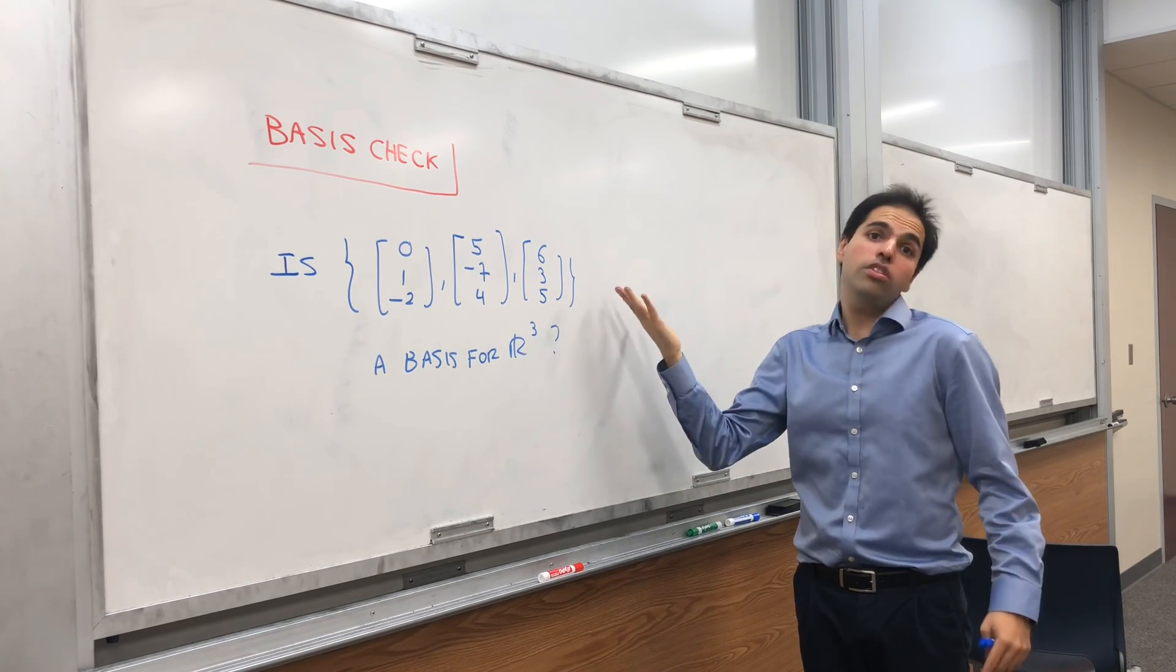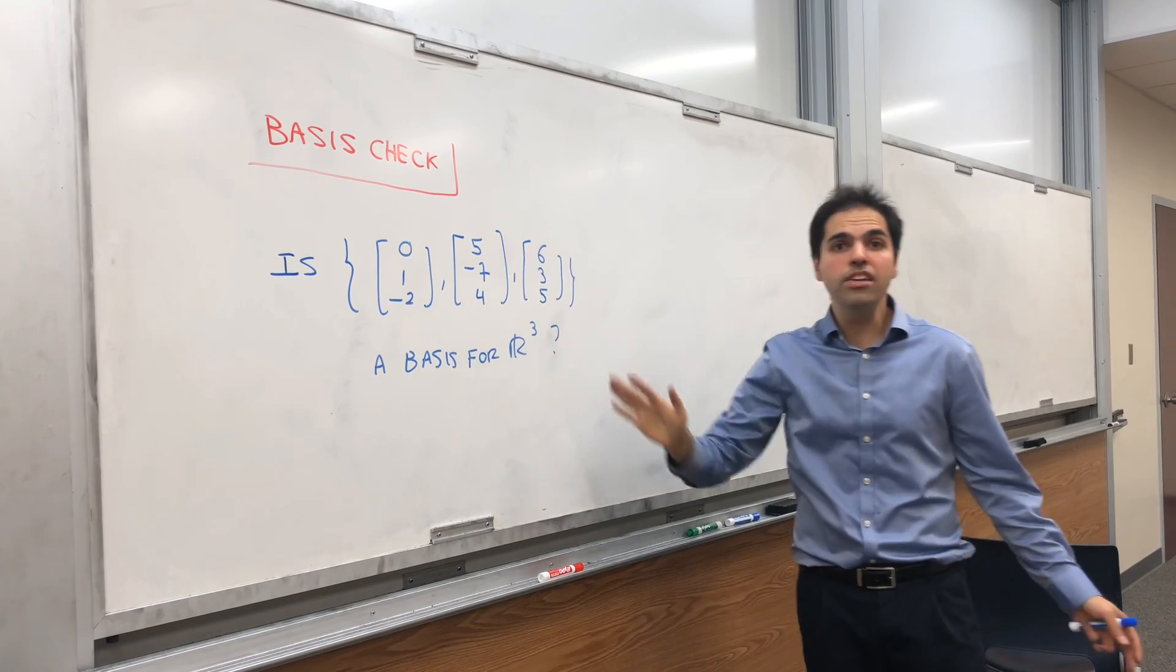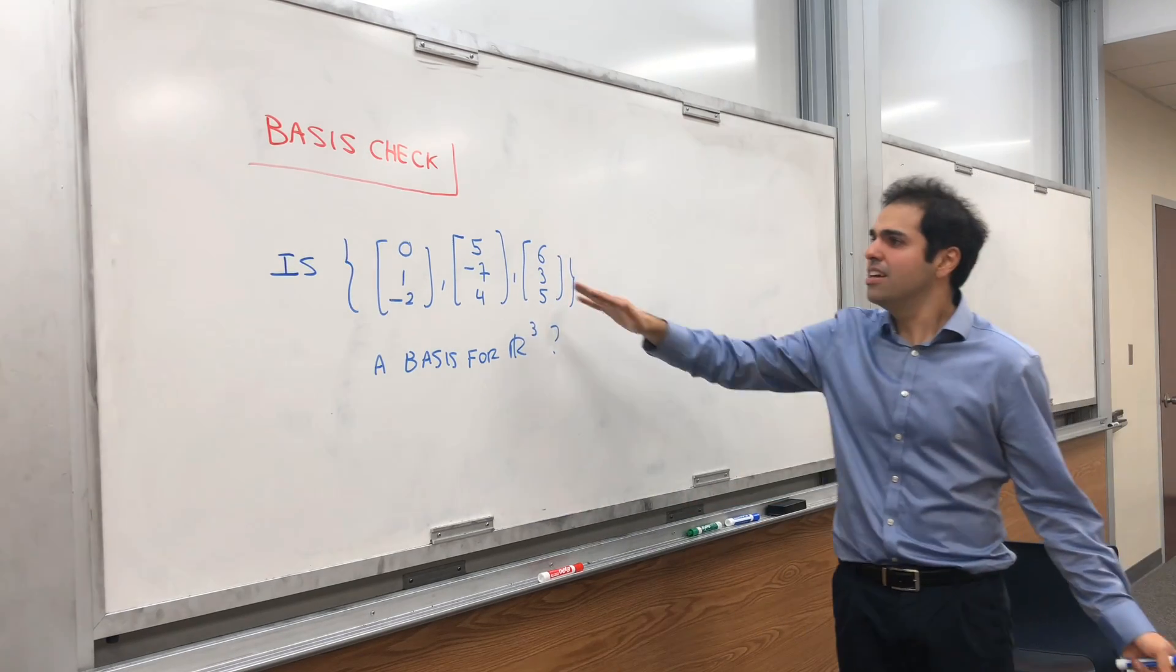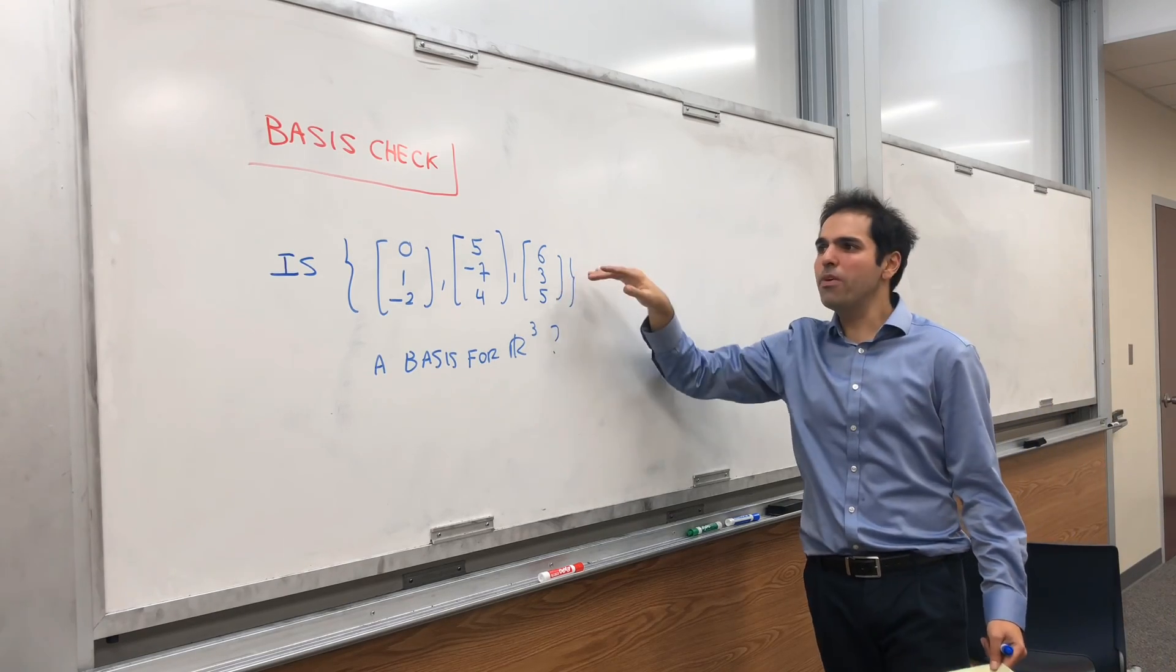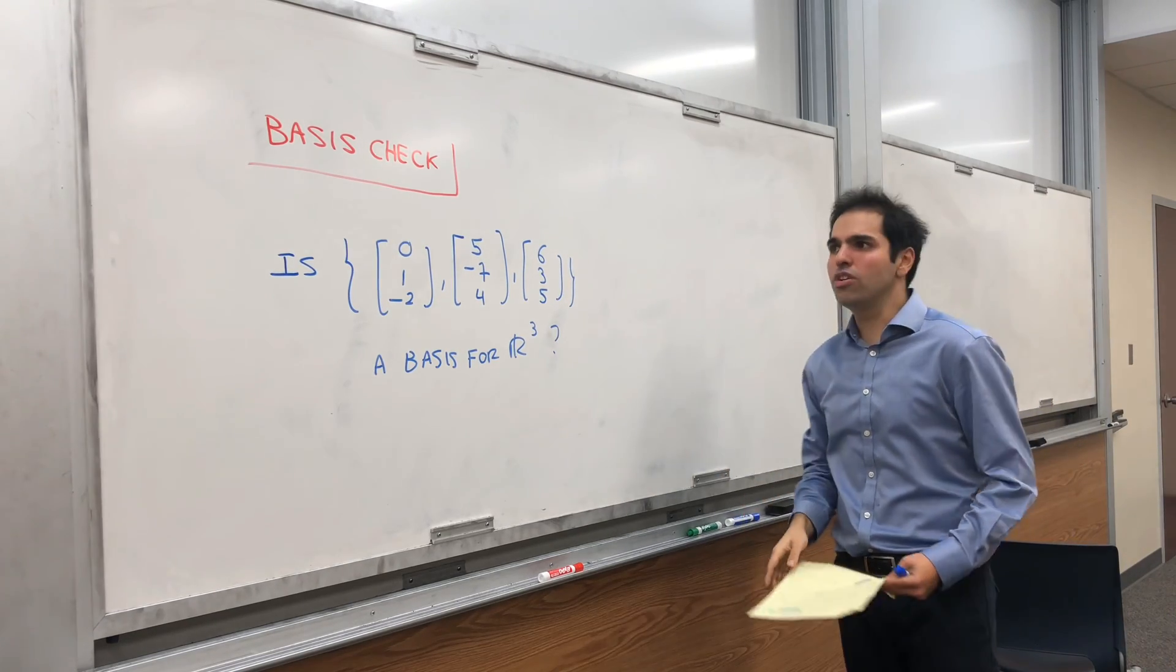Now, it still could not be a basis because it could, for example, be linearly dependent or something. So really, to check for this, as usual, you put everything in a matrix and you row reduce.